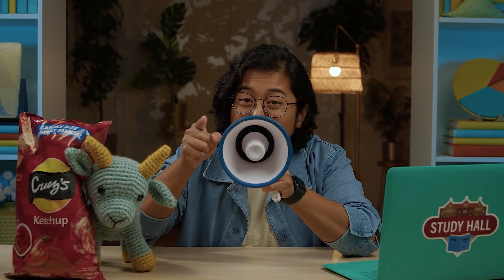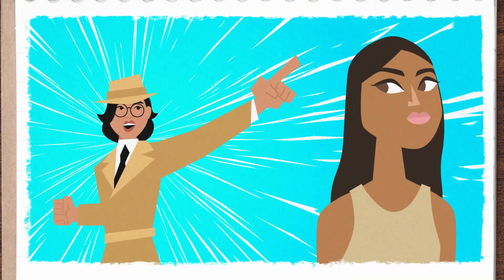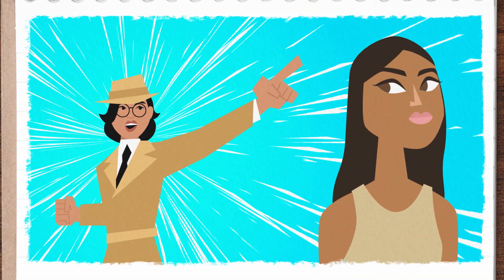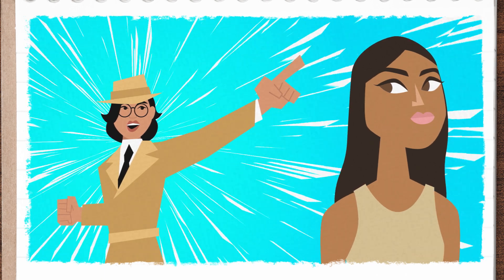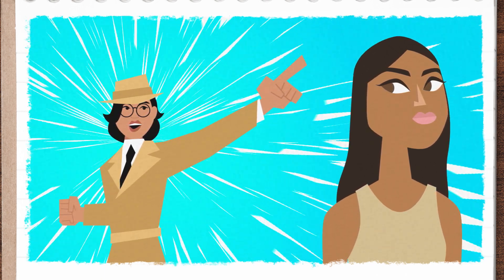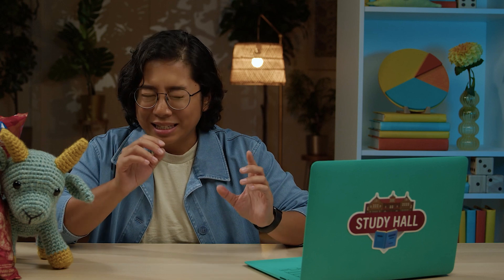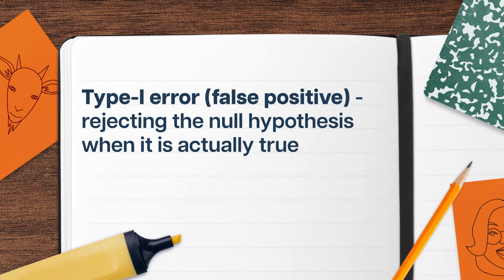We do not prove the null hypothesis — we just fail to reject it! Making a decision and accusing your cubicle neighbor of grand theft snack can feel great, but almost immediately we need to consider the consequences of making the wrong one. Because stats can go wrong. What if we decide that my coworker Melissa is guilty of the ketchup chip caper — meaning that we rejected the null hypothesis — but she wasn't actually the culprit? Rejecting the null hypothesis when it is actually true is called a type 1 error, or a false positive.